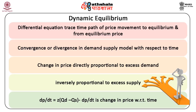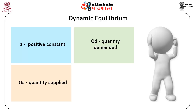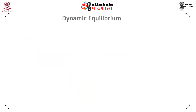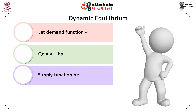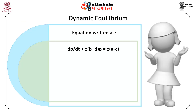In this equation, dp/dt is the change in price with respect to time, z is a positive constant, Qd is quantity demanded, and Qs is quantity supplied. The equation states that if Qd equals Qs, then dp/dt equals zero. Let the demand function be Qd = a − bp, where a and b are greater than zero. Let the supply function be Qs = c + dp, where c and d are greater than zero. The equation can then be written as: dp/dt + z(b + d)p = z(a − c).